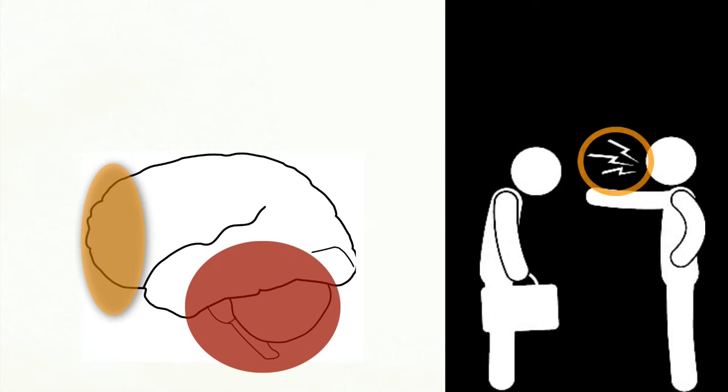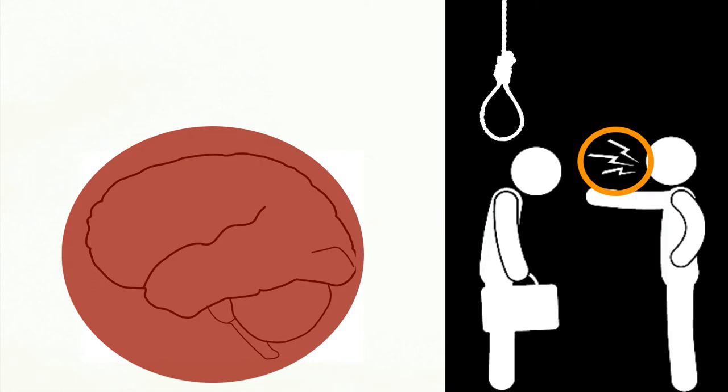Problem happens when sensory input our brain receives is wrongly interpreted as a threat to our survival. The lizard brain then hijacks the neocortex and does not give it a chance.